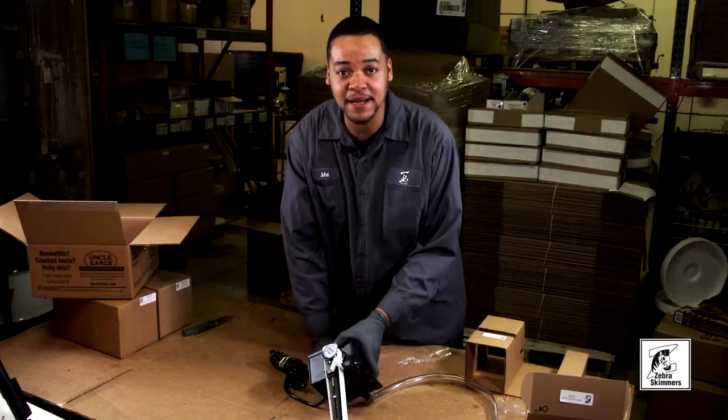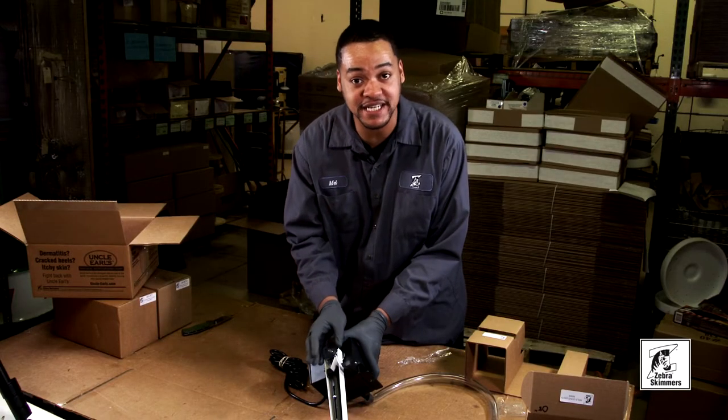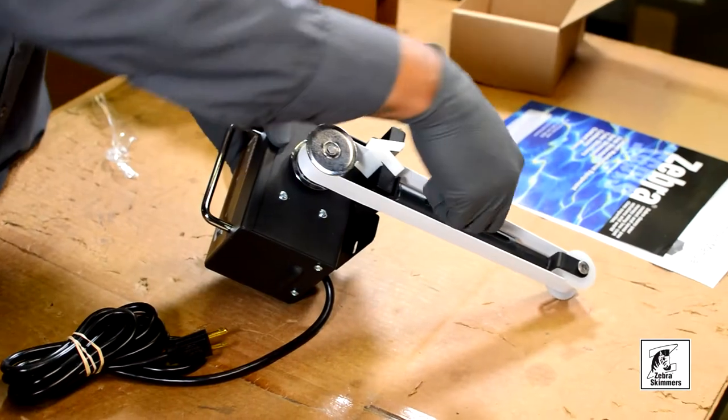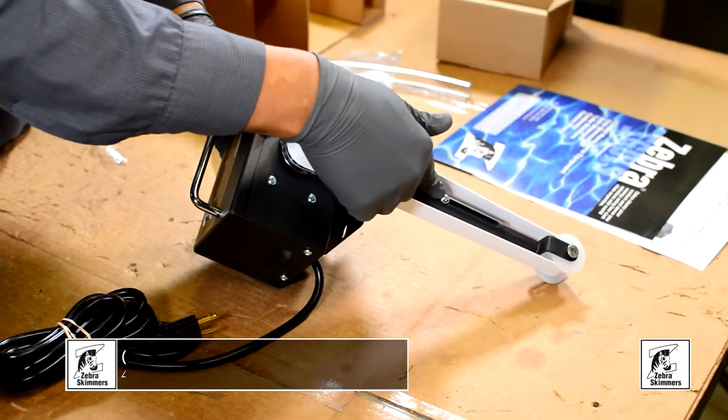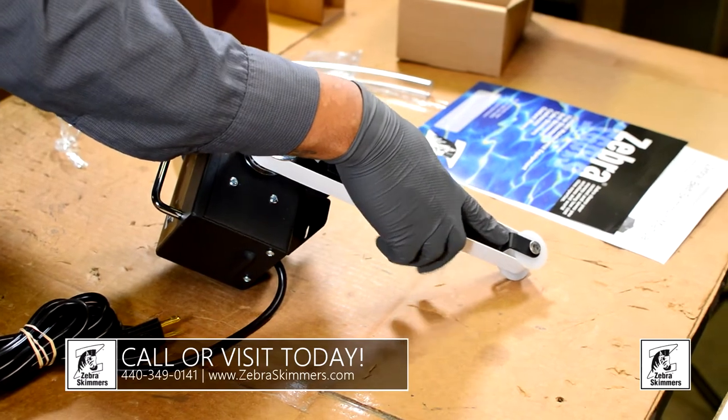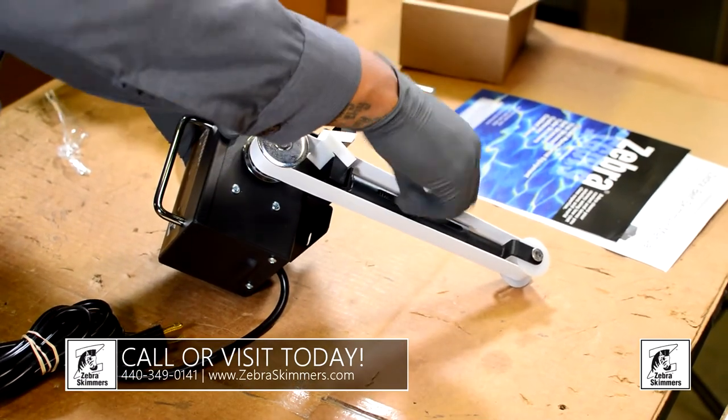Over time, because this belt is under tension, it will stretch a little bit. What you will want to do is unscrew your set screw, move your foot assembly down just a little bit, and re-tighten the set screw.